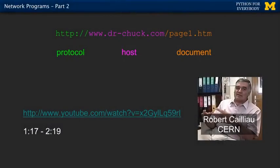One of the things HTTP standardized was the protocol of Uniform Resource Locators, or URLs. We type them so much we just think of them as something you type in to get something on your browser, but they actually contain information. 'HTTP colon slash slash' says use the HTTP protocol; 'www.drchuck.com' says go to this host; and 'slash page1.htm' says go get this document. These were concatenated together to form the URL.